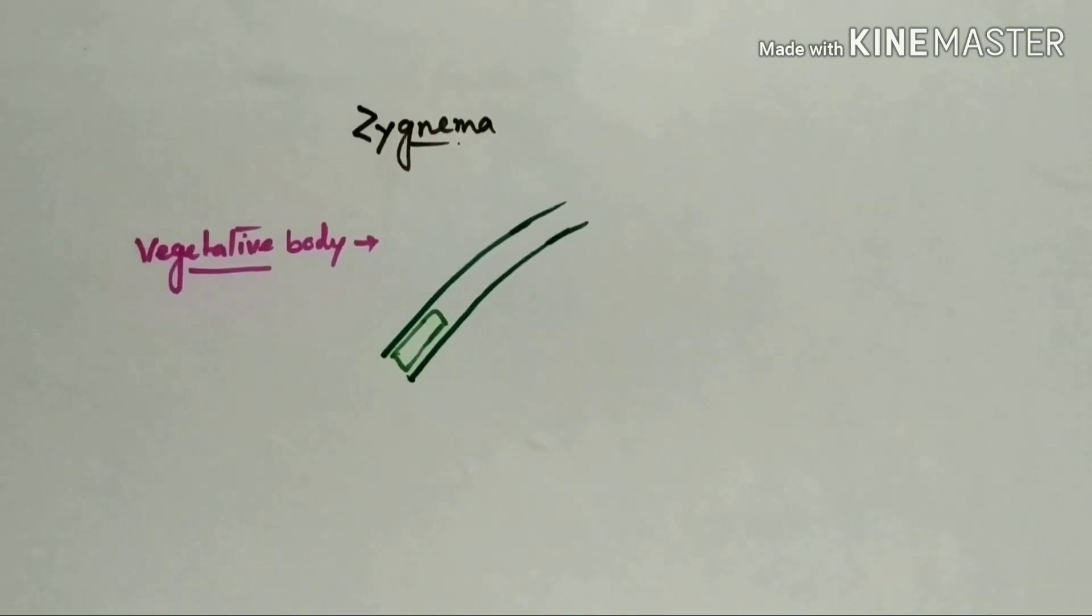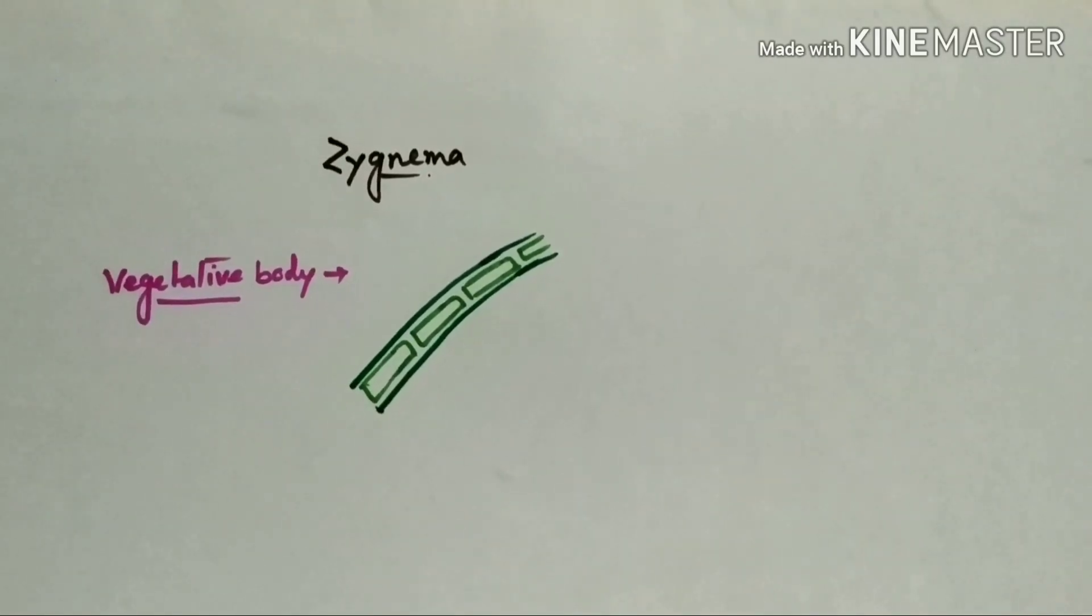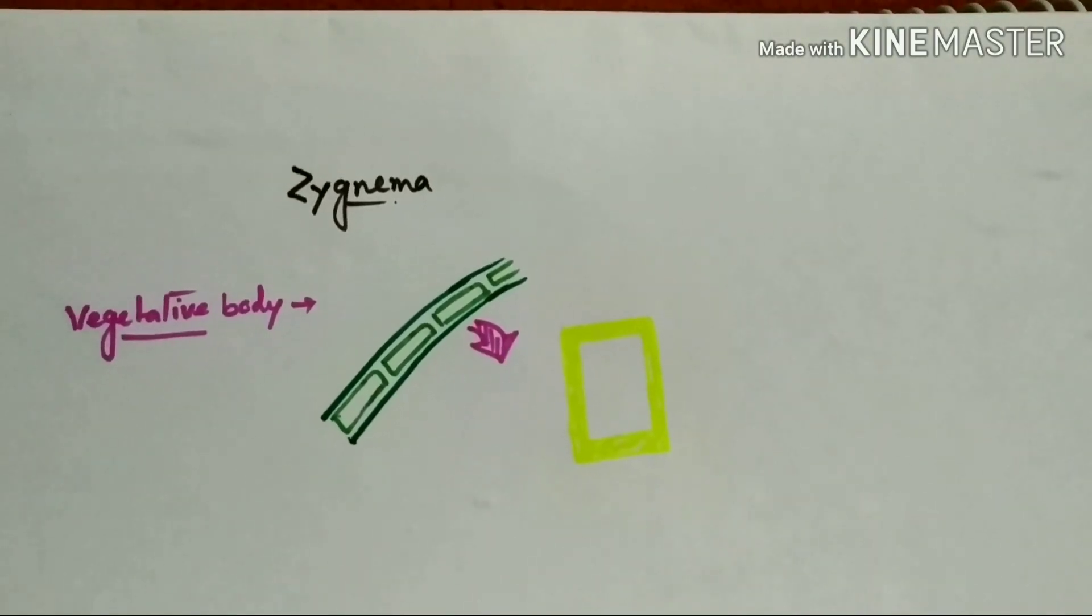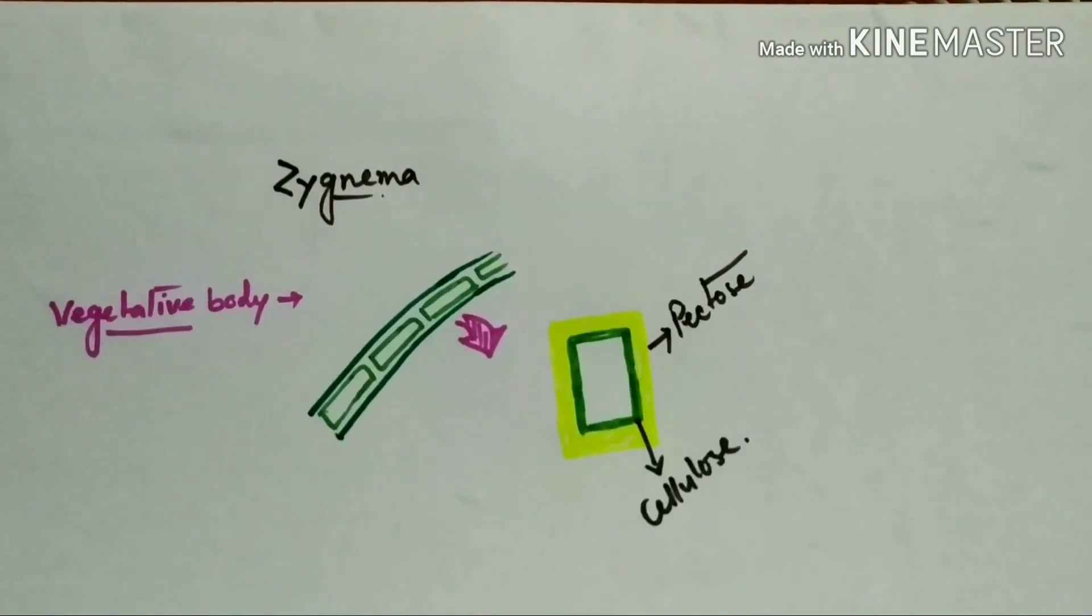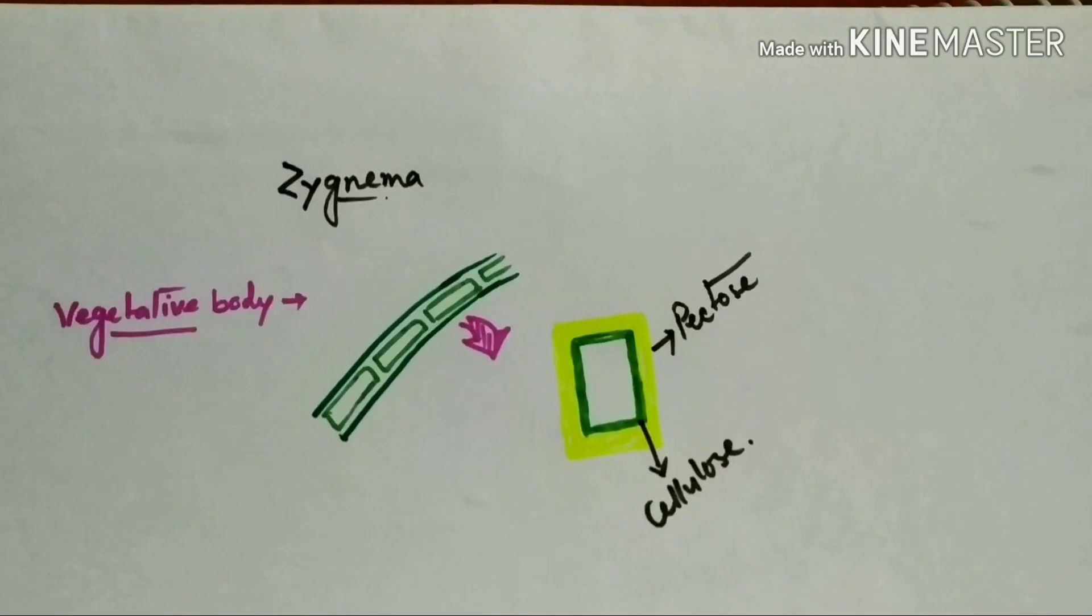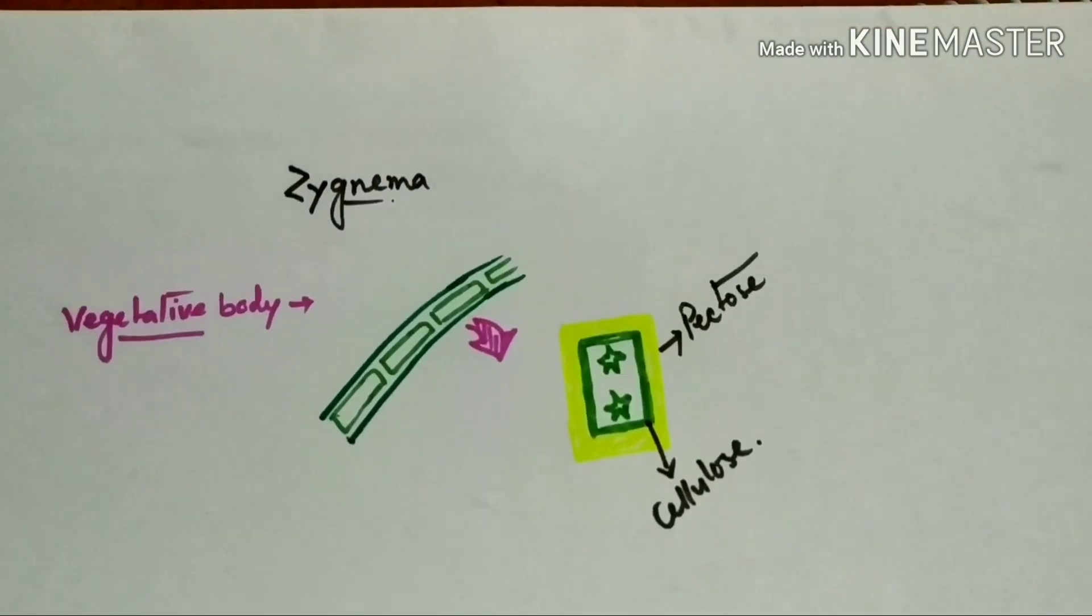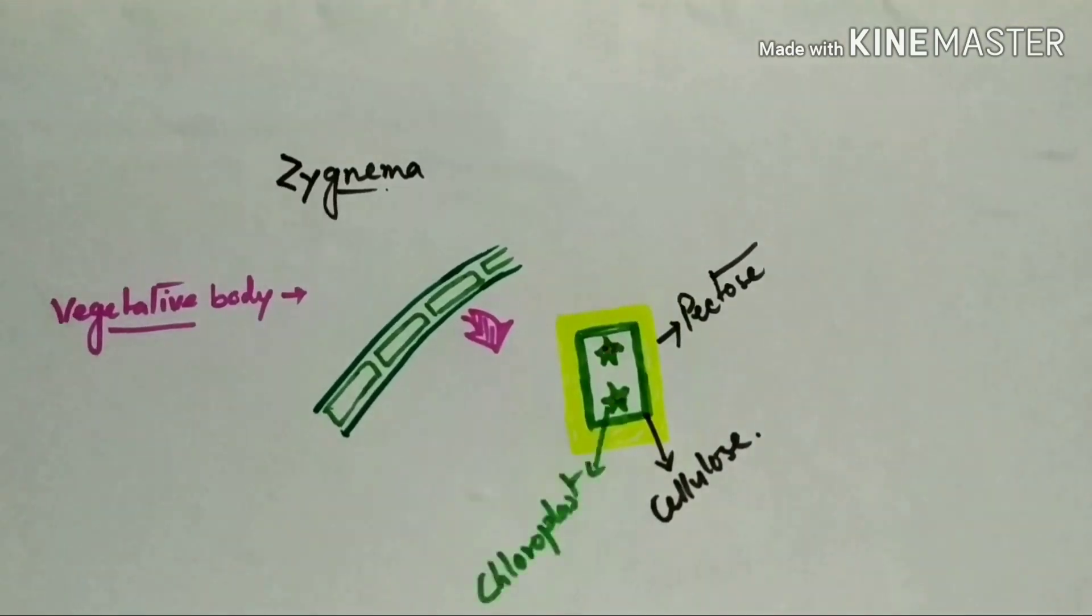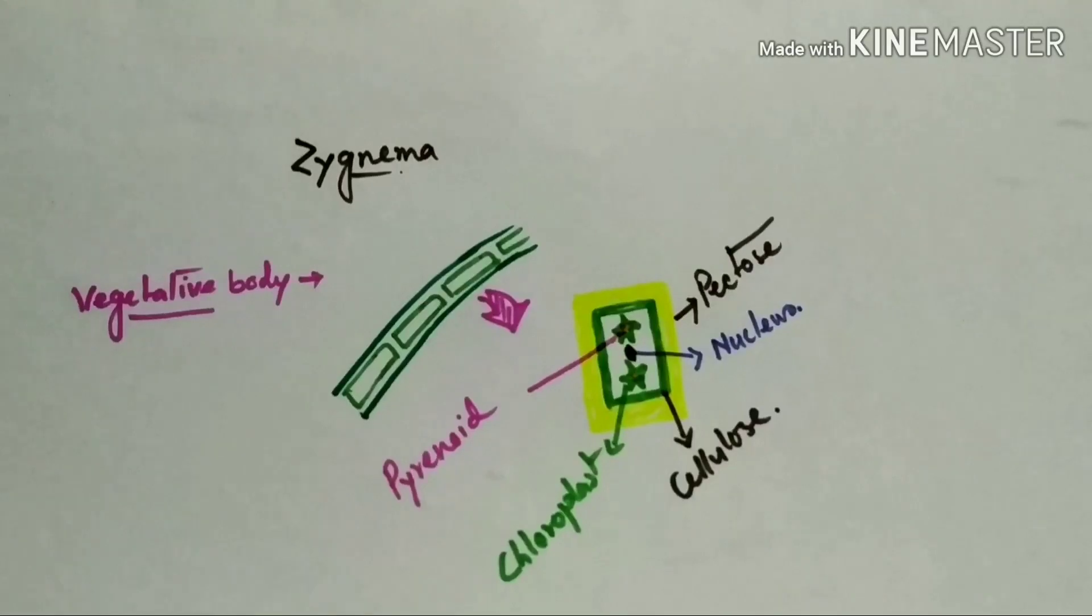Cells contain two layers: outer thick pectose layer and inner thin cellulose layer. Cells contain two chloroplasts, and within the chloroplast a pyrenoid granule is present. Nucleus present in between two chloroplasts.